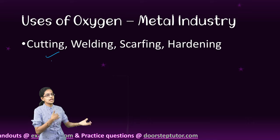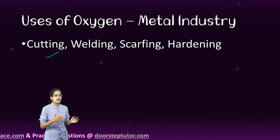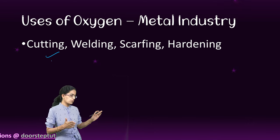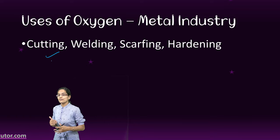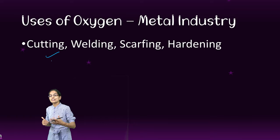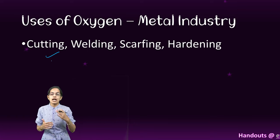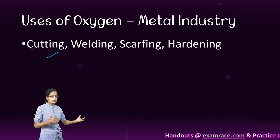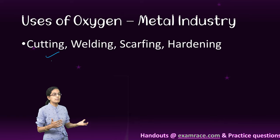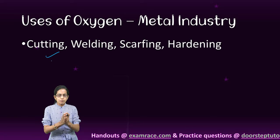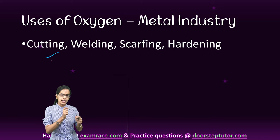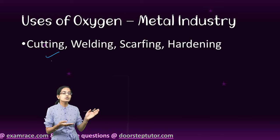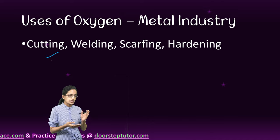Oxygen would react with carbon forming oxides, and those could be removed easily from the surface. Another important way is the oxidation reaction. Since oxygen has very good oxidizing properties, oxides would be created, and therefore the metals would get brittle and could be easily removed.